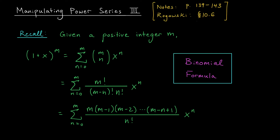Hi everyone, and welcome back. I have one more lesson for you on manipulating power series. Up to now, we've seen that many functions can be related back to one of the four building block functions — sine x, cos x, e to the x, or 1 over 1 minus x — using transformations like differentiation, integration, and substitution. If we remember the Maclaurin series for those four building block functions, we can efficiently compute Maclaurin series for many, many related functions.